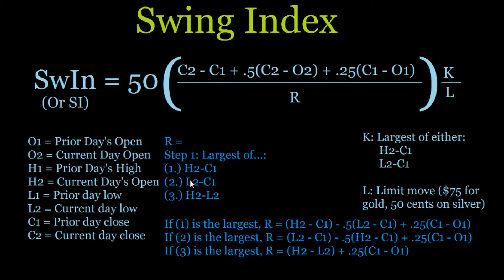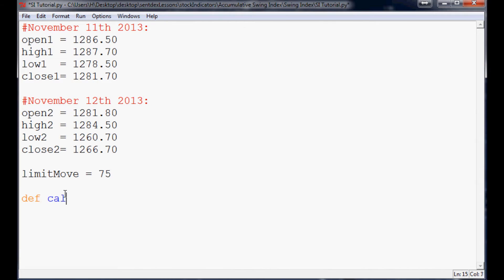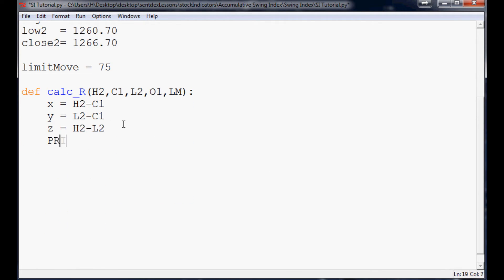So we know with R, first we need to find out what is the largest, either H2 minus C1, L2 minus C1, or H2 minus L2, right? So that's the first thing we need to do, so let's get started doing that. So for this, we're going to make a function. We're going to call this define calc underscore capital R. And this is going to take a few parameters. We need to have H2, C1, L2, O1, and the limit move price. To calculate this, those are the required things. So then we're just going to say X equals something, Y equals something, and Z equals something. What are they going to equal? We're going to first do those calculations, right? So H2 minus C1, and then this is going to be L2 minus C1, and then finally H2 minus L2. And just for the sake of seeing them, let's go ahead and print them out so later on we know whether or not our logic is actually correct. X, Y, and print Z.